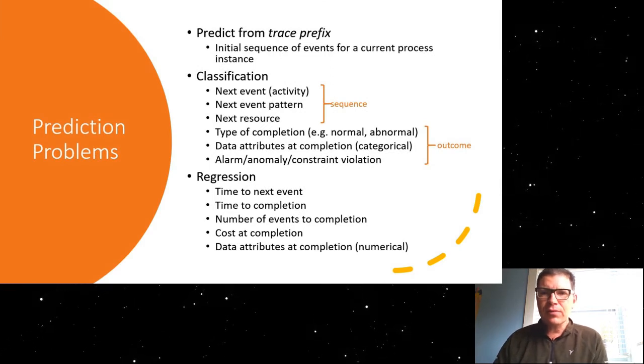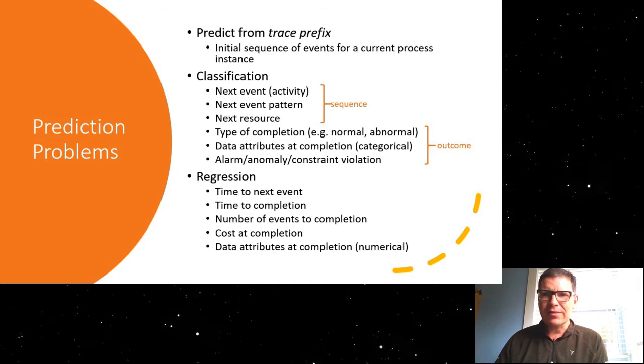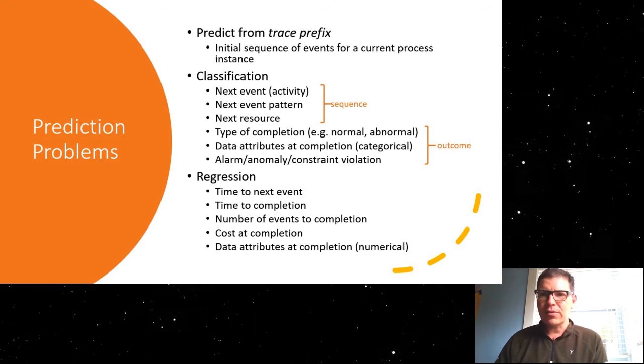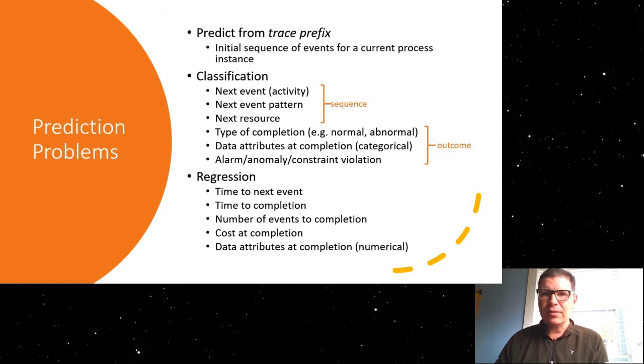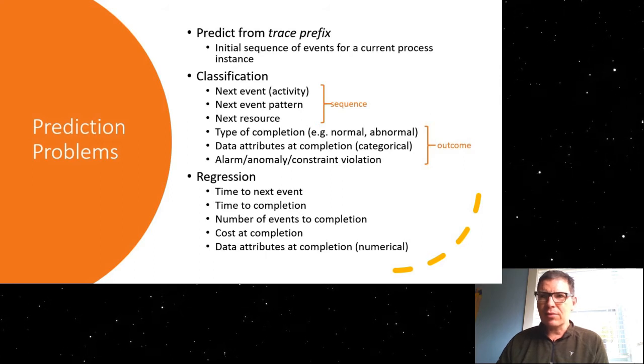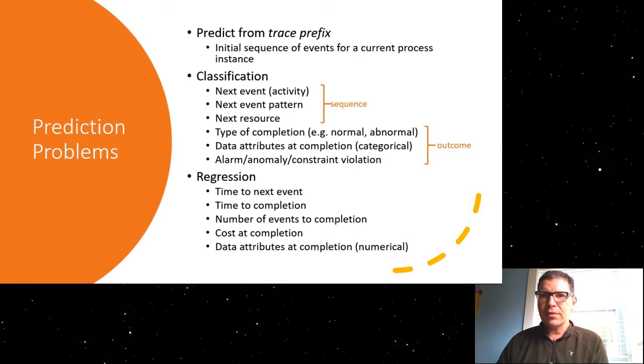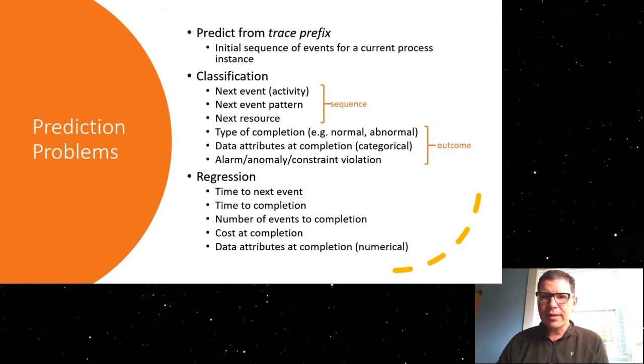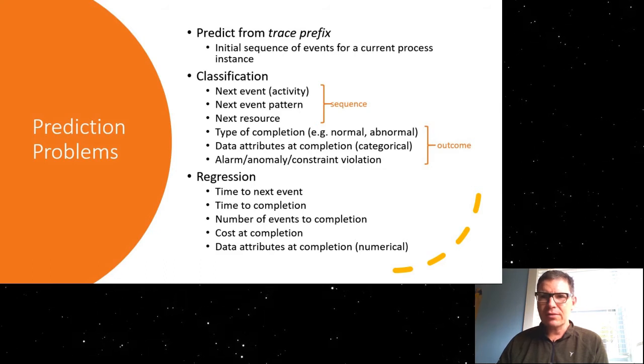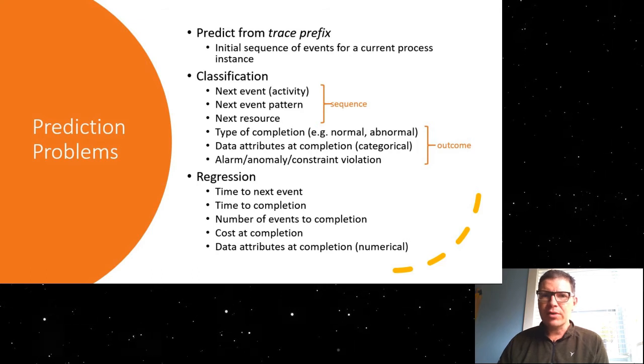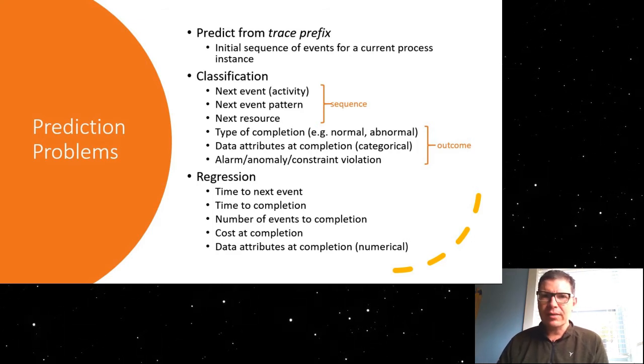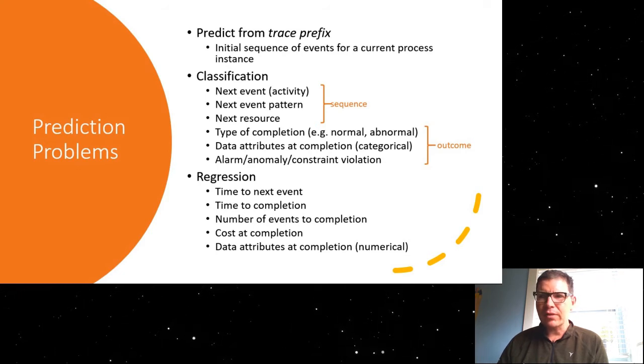Now, it is quite useful to look at a currently running process instance or case and try to predict from this. So think about a customer service agent, customer calls up and says how long is this process going to take. So it might be useful to predict the time to completion. Or a manufacturing process or a manufacturing engineer wants to see how likely is it that we'll get a fault in the next five activities here so that we can prevent this fault from occurring. So what we like to do is we like to predict from a trace prefix. So this is a small sequence or short sequence of events in a trace and we'd like to predict what happens after. And there are a number of prediction problems that we can define. Some of them are classification problems. So we can look at, for example, what's the next event that will happen?